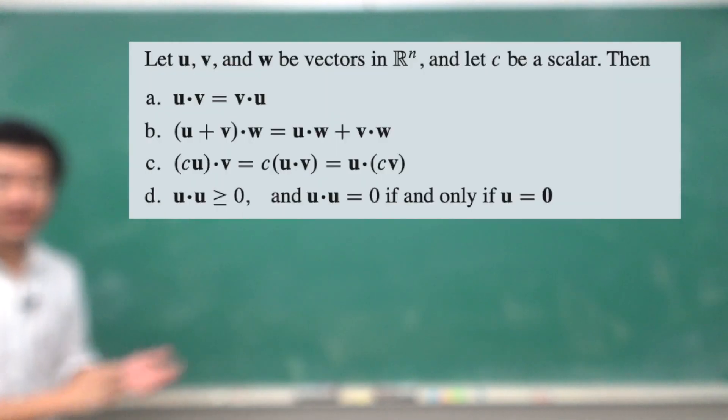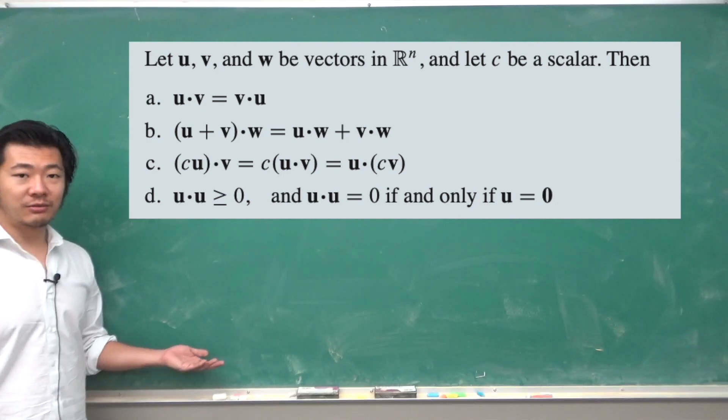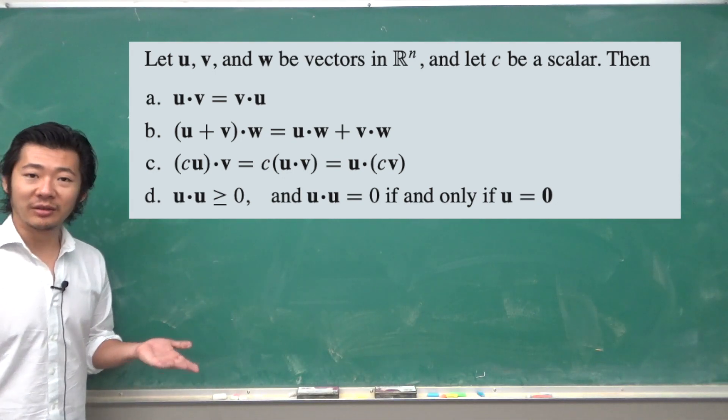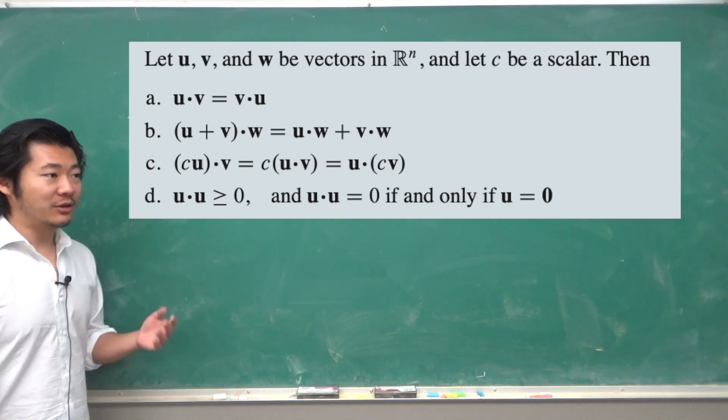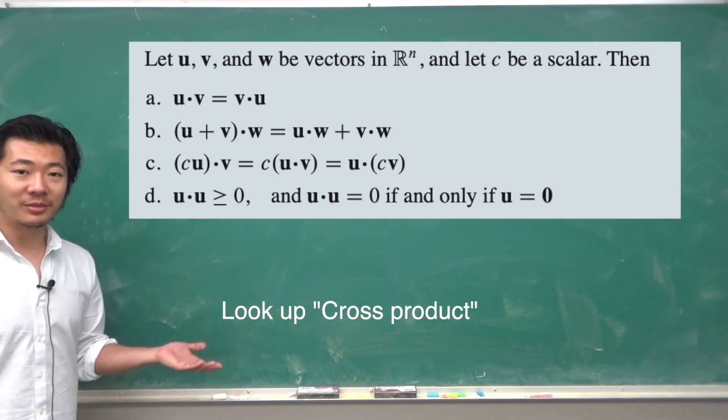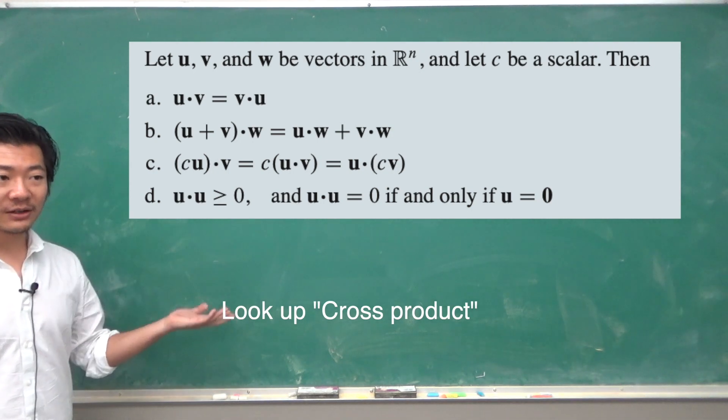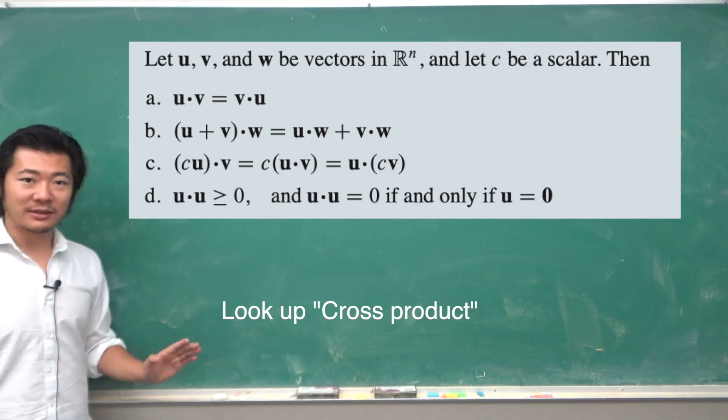So here are some properties of the inner product or the dot product. So it really is like multiplication of vectors, except that when you multiply two vectors, then you get a number. There might be another multiplication between a vector and a vector, and you get a vector out of it, but that we will save for another time.